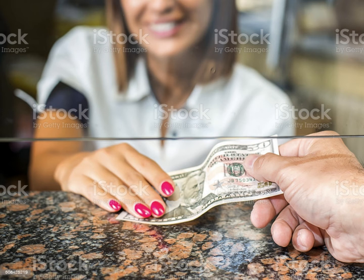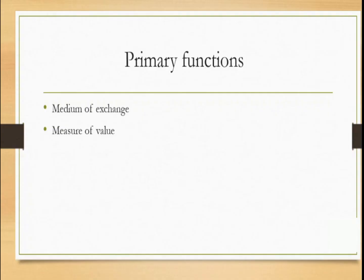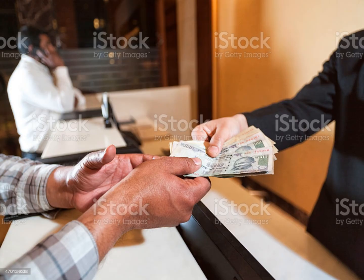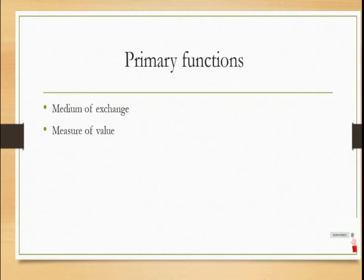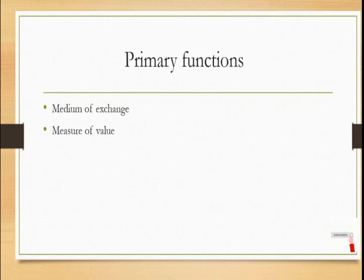The medium of exchange indicates that money acts as a medium of exchange, and by performing this function, money has removed probably all the major difficulties we used to have in the barter system. Any type of transaction a buyer and seller want to carry out can easily be carried out with the help of money. For example, if you want to buy a mobile phone of 30,000 rupees, you just pay 30,000 rupees and you have your mobile phone. So money plays a very important role in conducting all transactions.